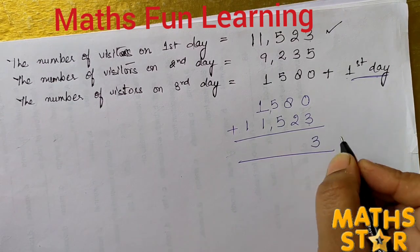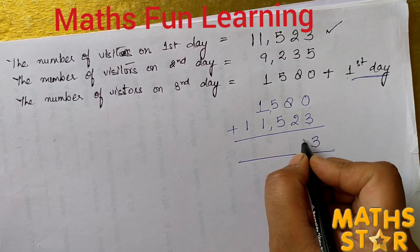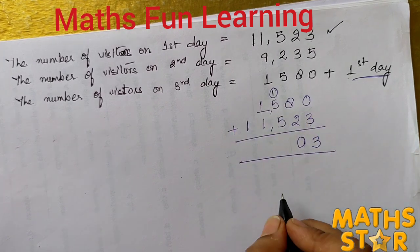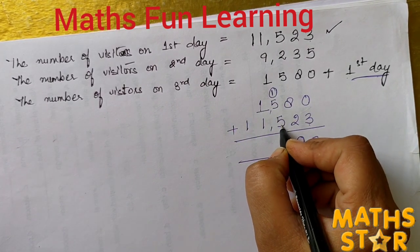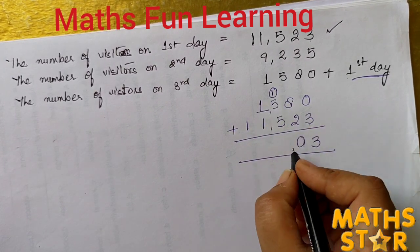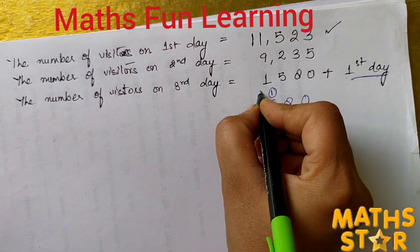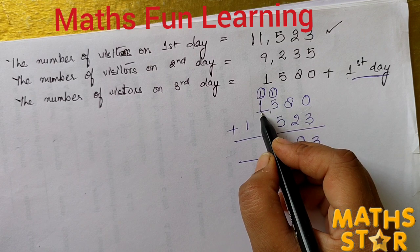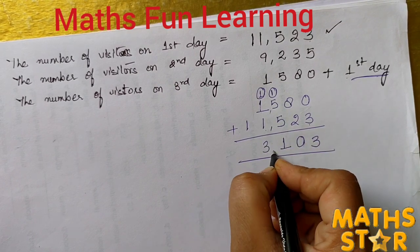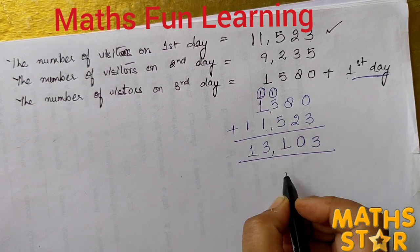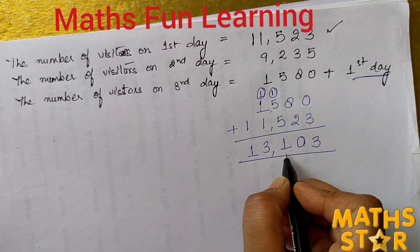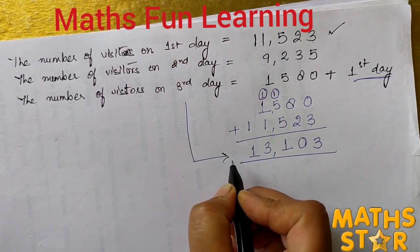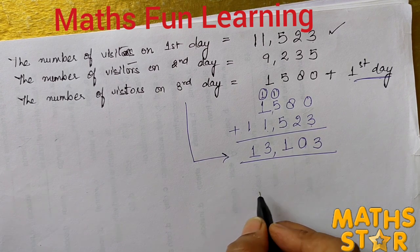Adding 1,580 and 11,523: 0 plus 3 is 3; 8 plus 2 is 10, write 0 carry 1; 5 plus 5 is 10, plus 1 is 11, write 1 carry 1; 1 plus 1 is 2, plus 1 is 3; and 1. So the number of visitors on the third day is 13,103.